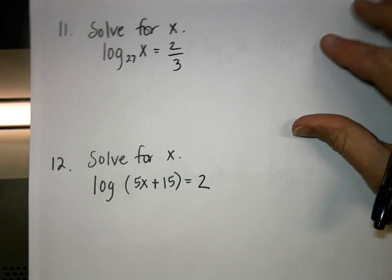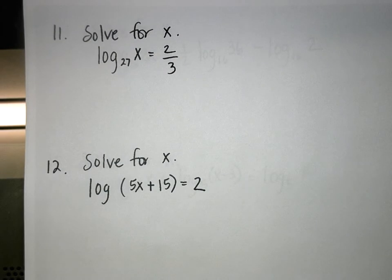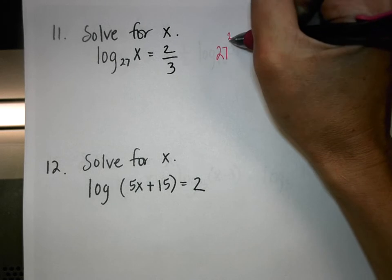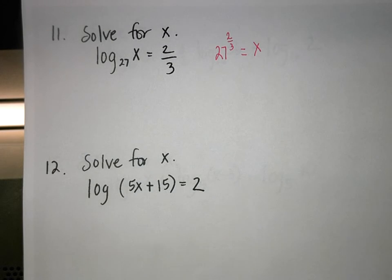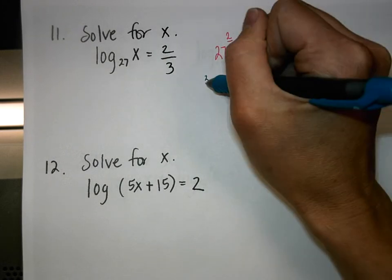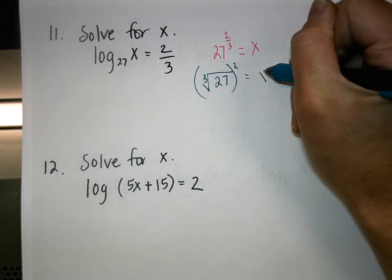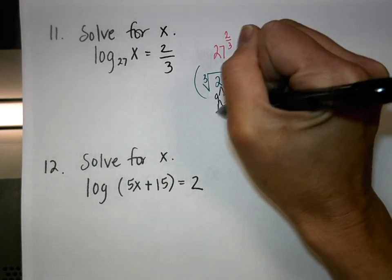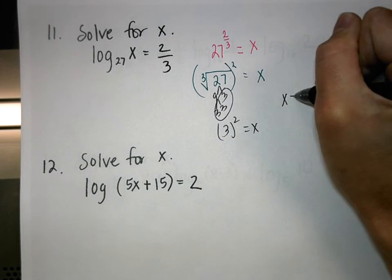Number 11: If you can't solve something the way it is, change the form. We'll change to exponential form: 27 to the 2/3 power equals X. The bottom number represents your root and the top number represents the exponent, so take the cube root of 27 and raise that to the second power. The cube root of 27 is 3, and 3 squared equals 9, so X equals 9.